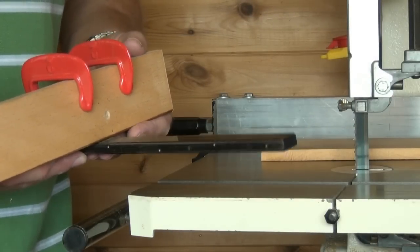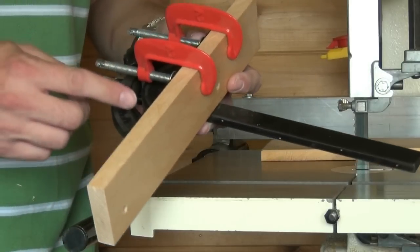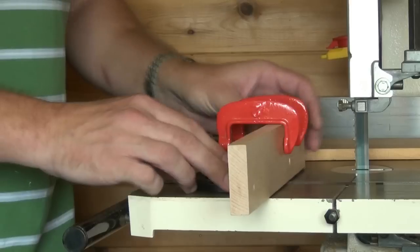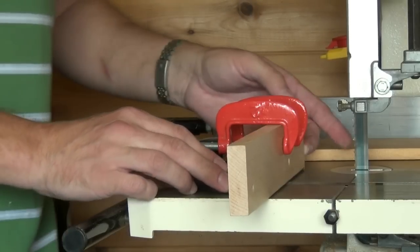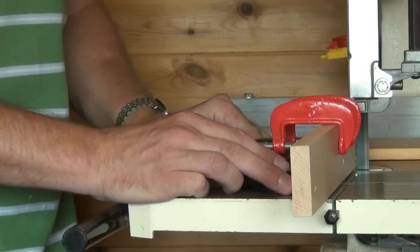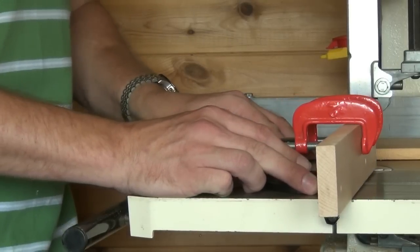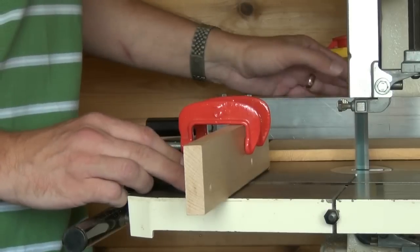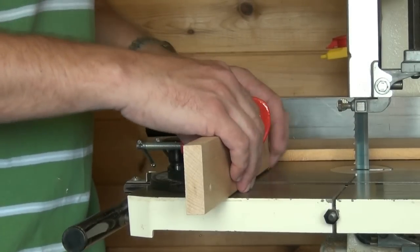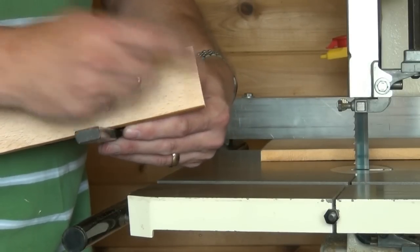For accurate cross-cutting, attach a fence to your mitre gauge either with screws or clamps, extend it so it's further than the blade, and then cut off the excess at your blade. This now means that the end of your fence is exactly where the blade is going to cut.